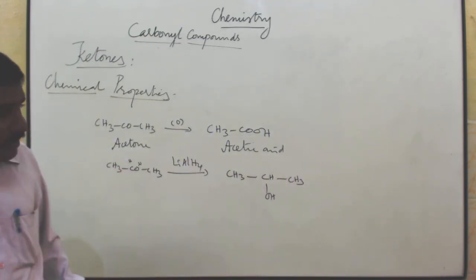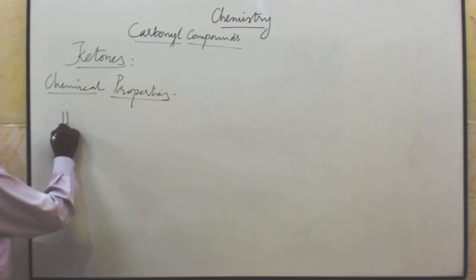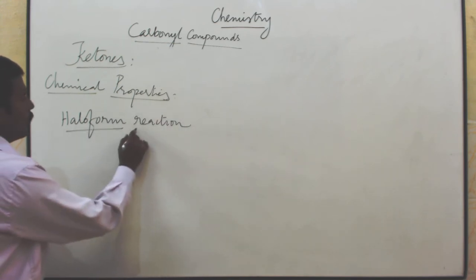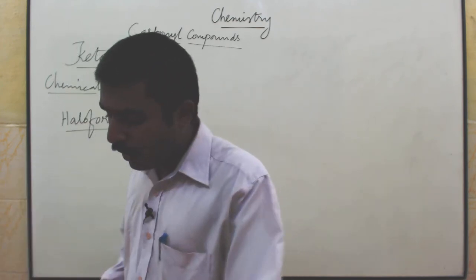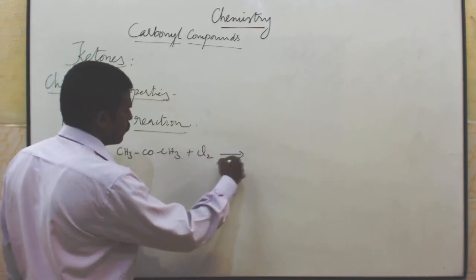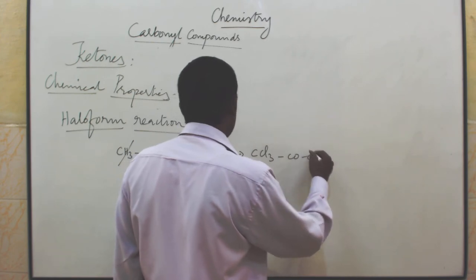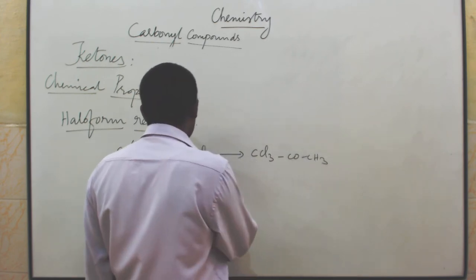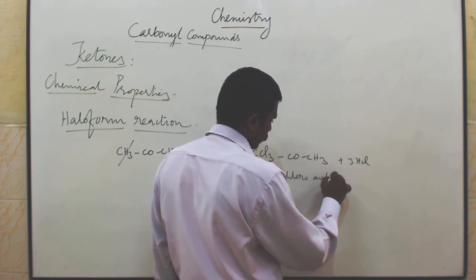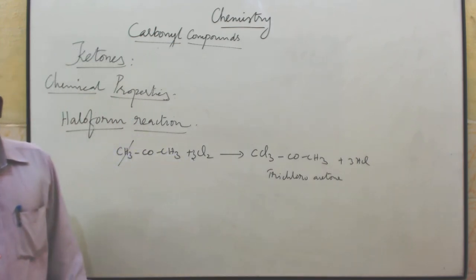Next one is haloform reaction. Acetone reacts with chlorine. Three hydrogen atoms are replaced by three chlorine atoms, giving CCl3COCH3, namely trichloroacetone. Trichloroacetone is the product in the haloform reaction.